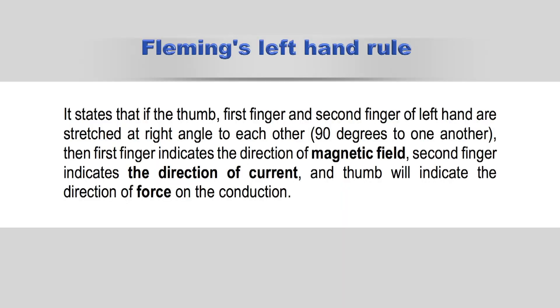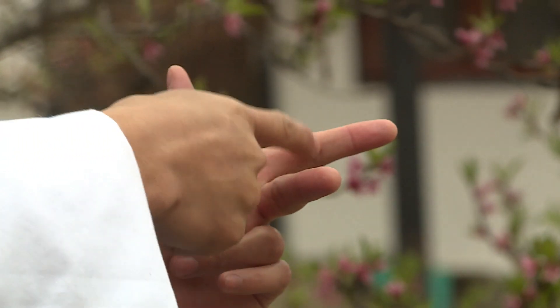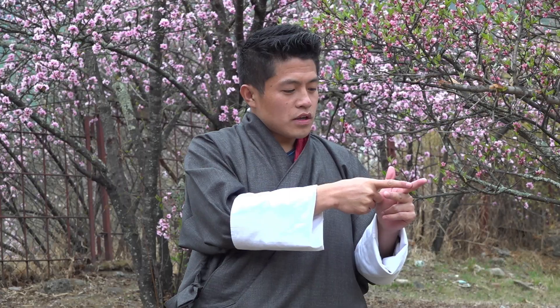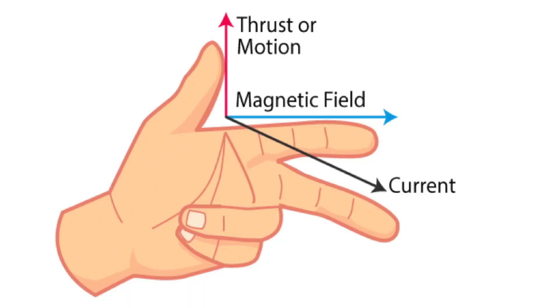According to Fleming's left hand rule, when the thumb, the first finger and second finger are stretched mutually perpendicular to each other, and if the first finger indicates the direction of the magnetic field and the second finger indicates the direction of the current, then the thumb would indicate the direction of the motion.